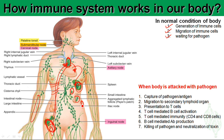When the body is invaded by a foreign pathogen, the whole system mounts an immune reaction. I will go through this step by step, beginning with the capture of the pathogen. In the normal state, when a foreign invader enters the body, it can come through different locations such as the skin.